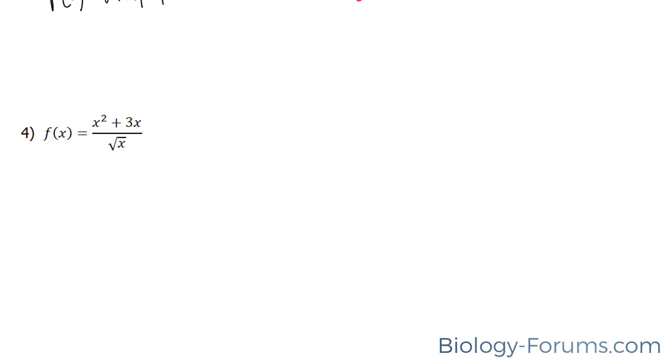Now, in this case, you can easily get confused here, but recall that in algebra, this denominator can be given to both of those terms above. So you end up with x squared over the square root of x plus 3x over the square root of x.